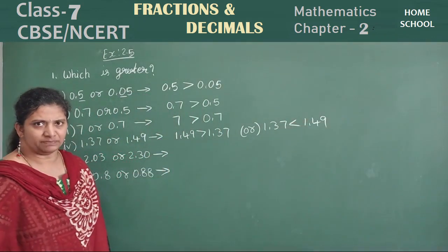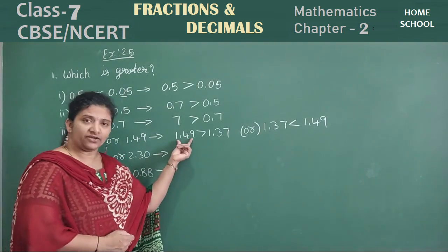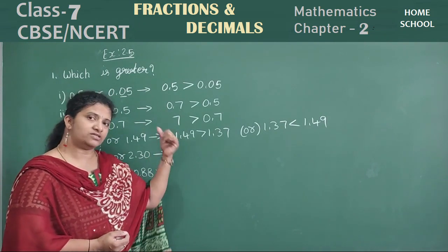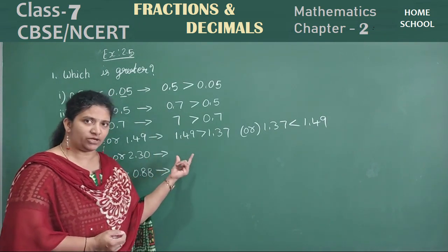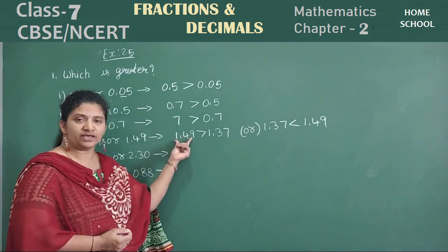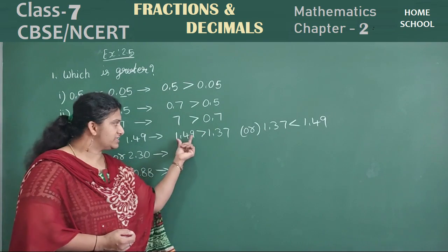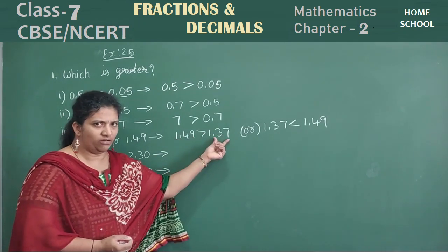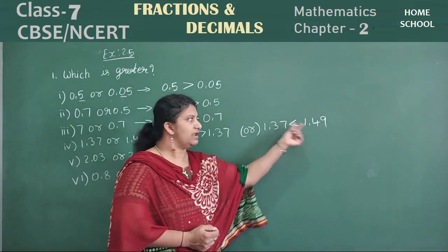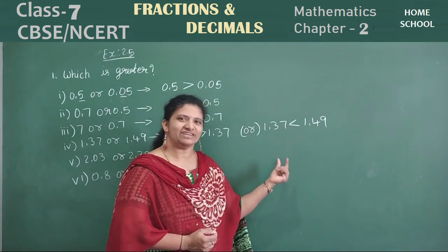Both have the same answer. Which is greater? This is greater, we are saying. How can you write? Using less than symbol and also greater than symbol, you can write all these. One point four nine is greater than this number. If this is greater, then this is lesser. So with that, one point three seven is lesser than one point four nine — means one point four nine is greater.